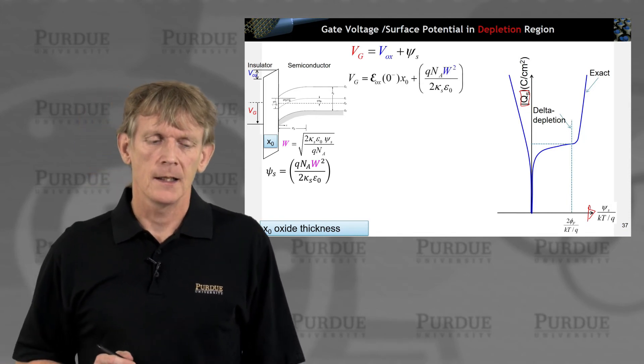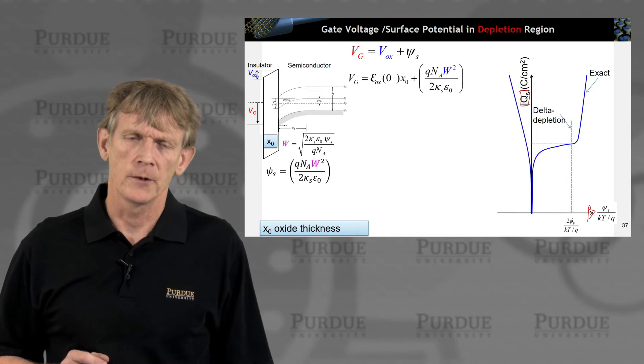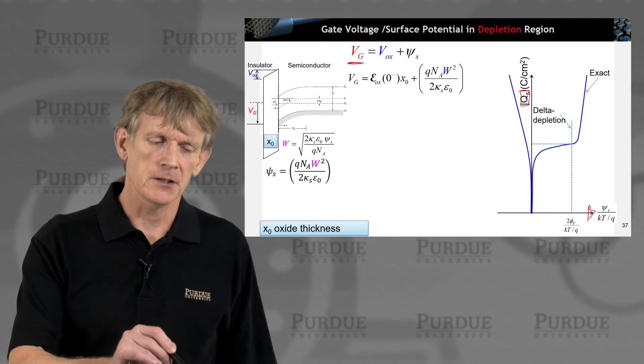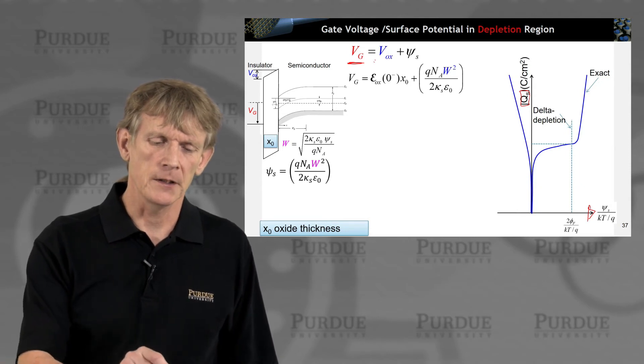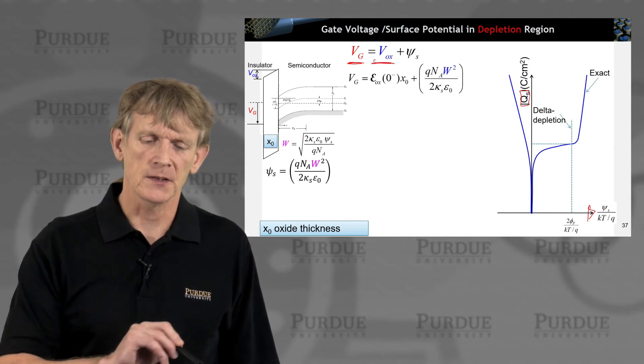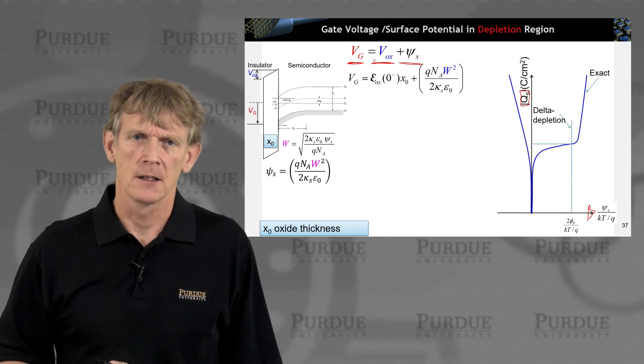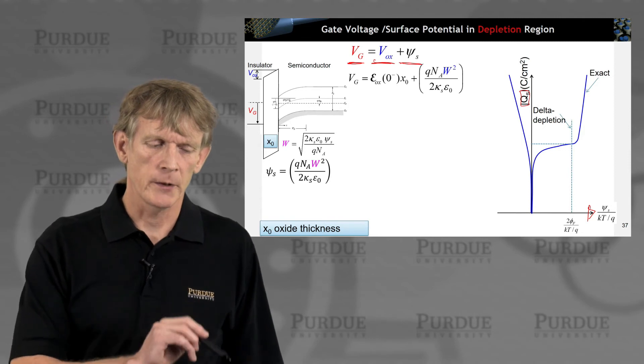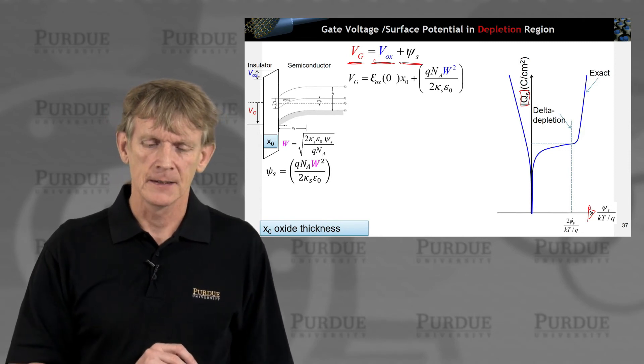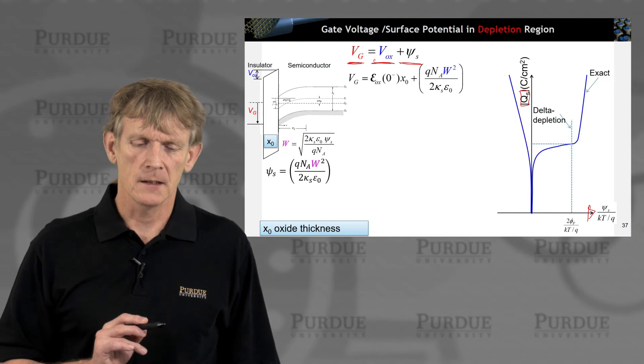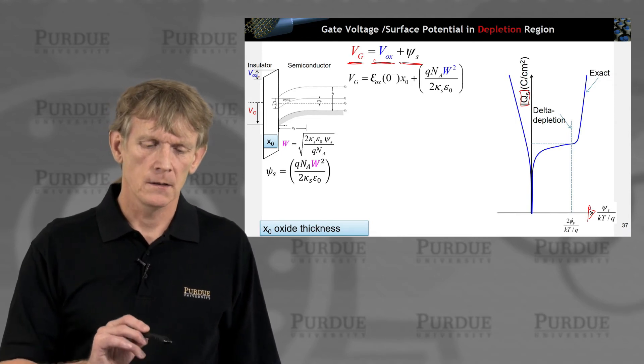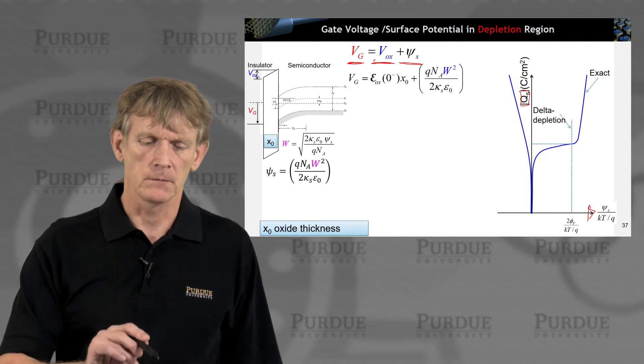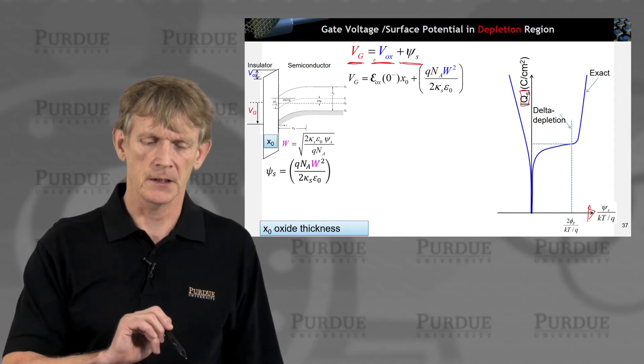Now, I had basically stated already that the gate potential here that we're applying must be summing up to the oxide potential and the surface potential of the device. So, that's what we had. Oxide potential is here. Now, what is the oxide potential? Here's the gate potential.